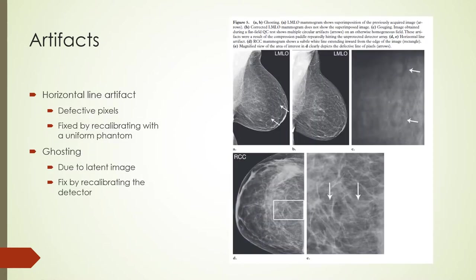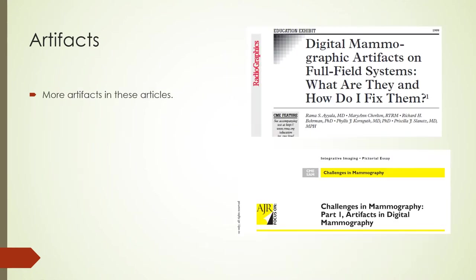Additional artifacts include a horizontal line artifact attributed to a line of defective pixels, corrected by recalibrating the detector by imaging a uniform plexiglass phantom. A ghosting artifact occurs when a latent image from a previous mammogram is superimposed on the current image, corrected by recalibration of the digital detector to remove the ghost image. A gouging artifact is also shown. More artifacts can be found in the referenced articles.